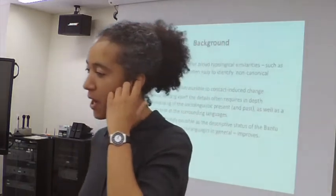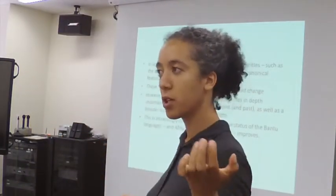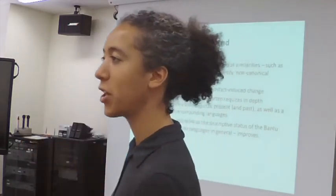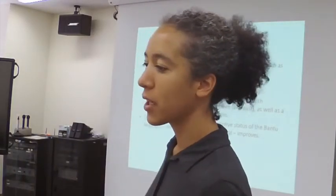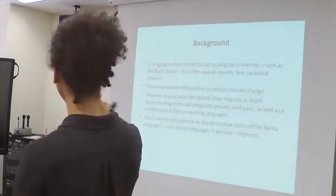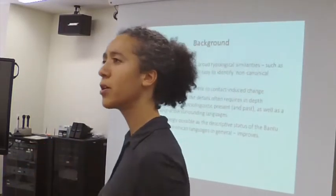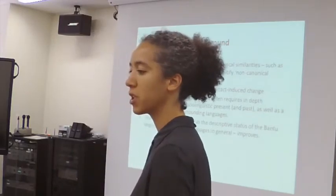One of the things that's really nice about working on Bantu languages is you have these broad similarities — we can talk easily about noun classes or particular morphological features. And when that's the case, it's easy to identify features which aren't common. Verb-auxiliary order in Rangi stands out if you're used to knowing how the Bantu verb works — auxiliary then verb — and you come across something striking.